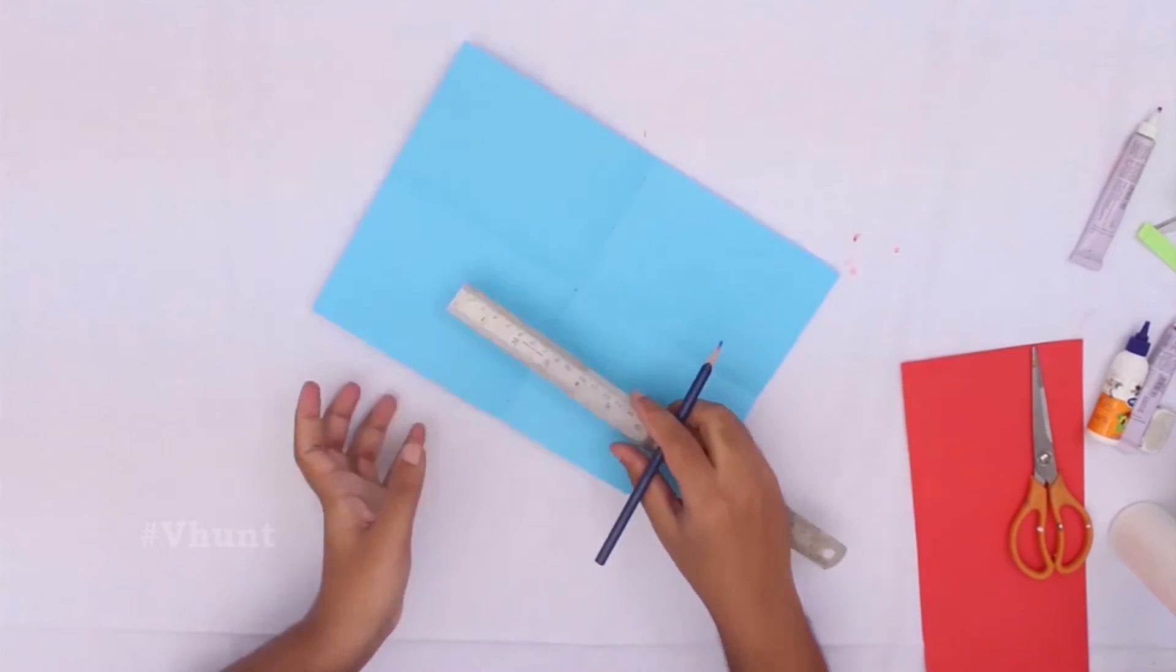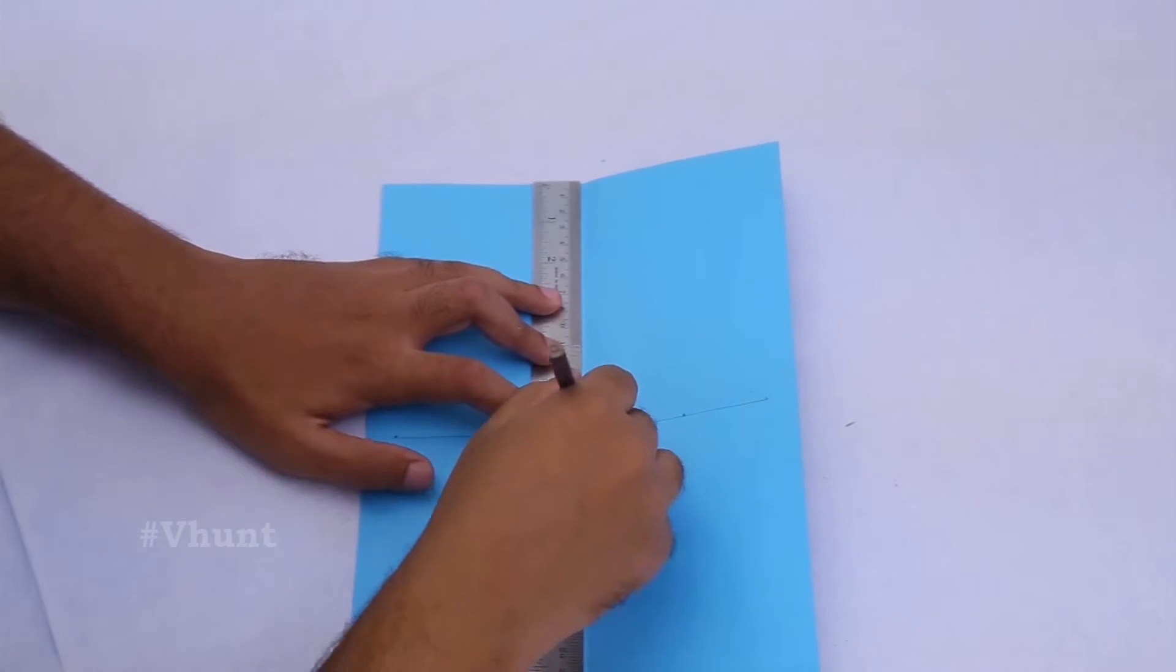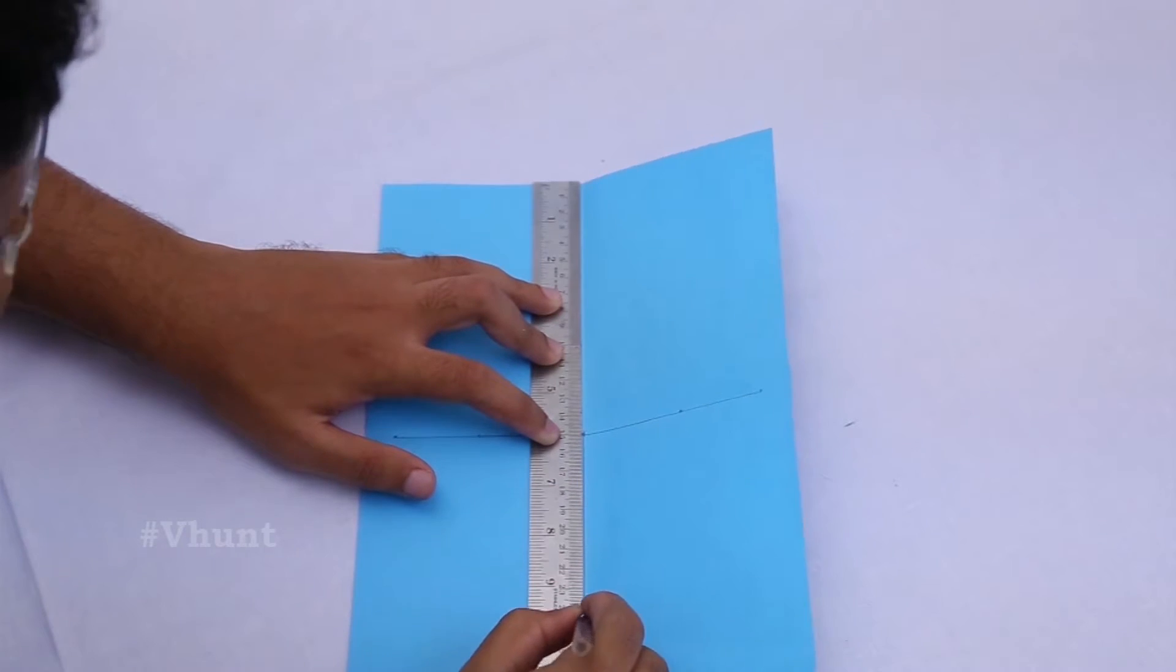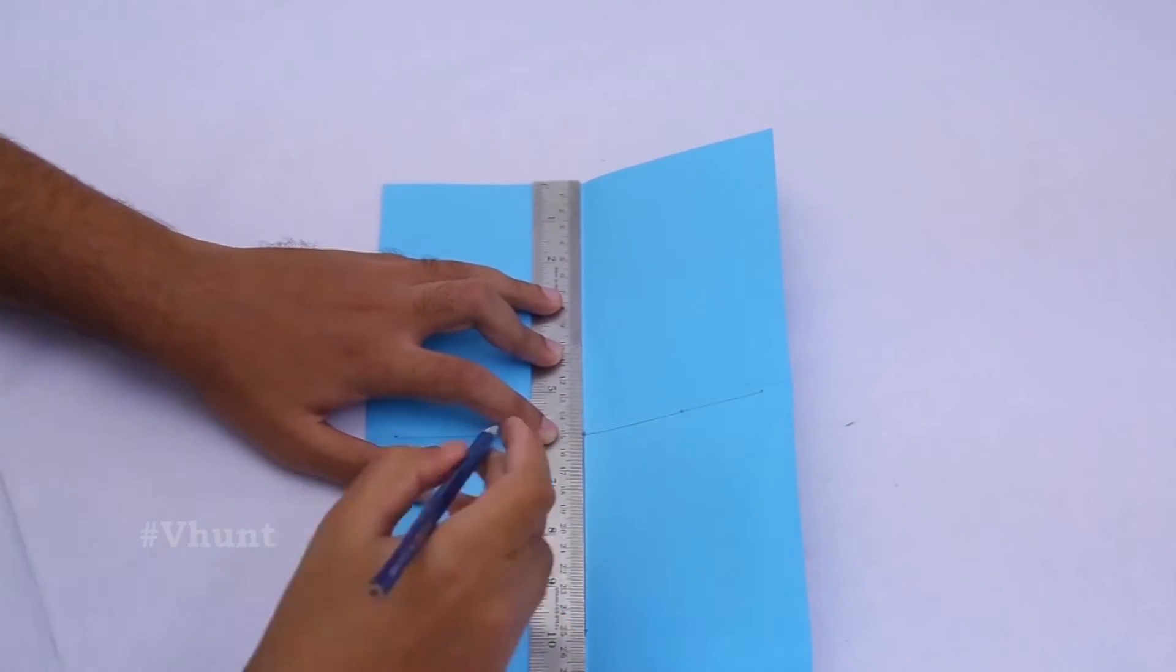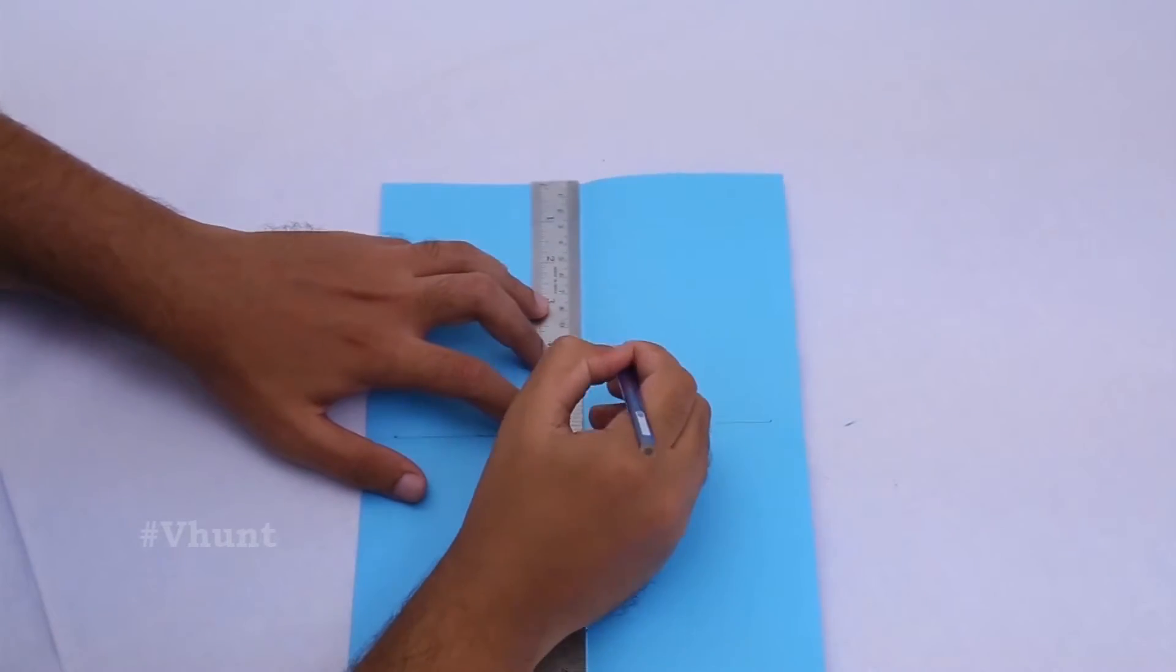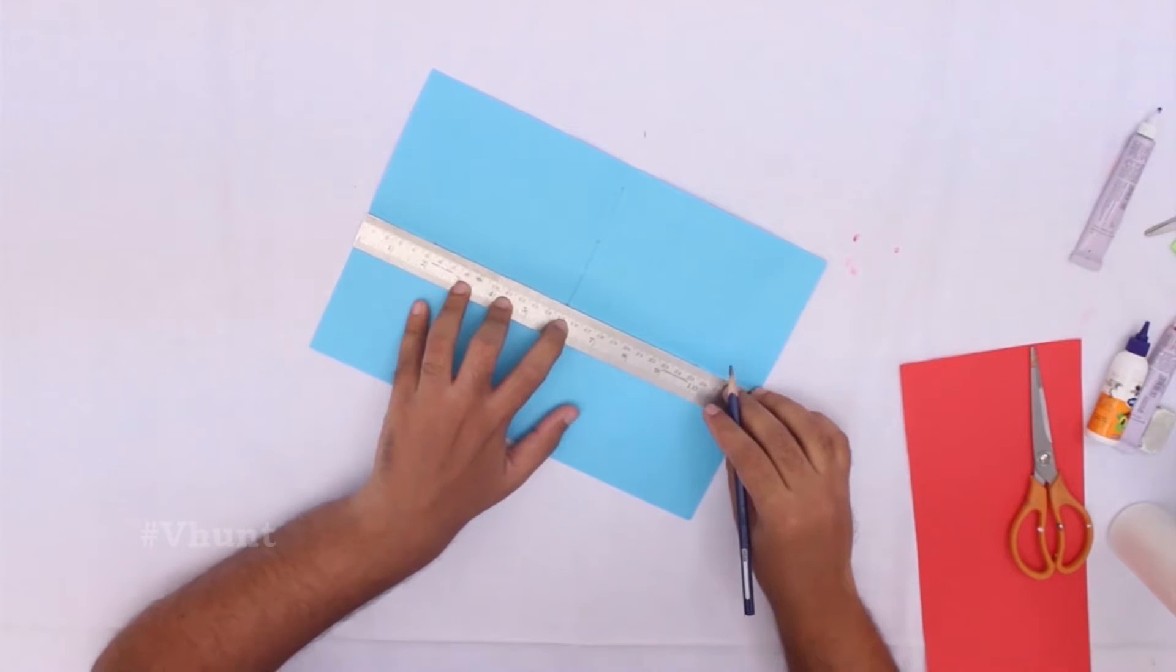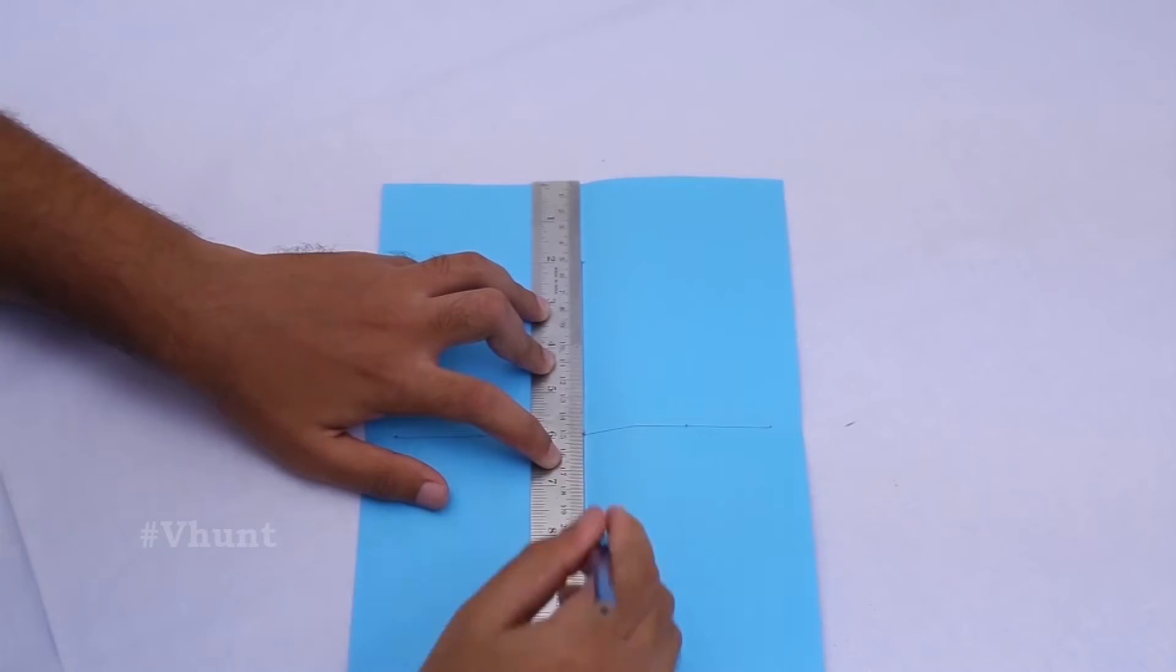Now turn the paper and mark a line from middle to right and left like this. The length should be 10 cm each.